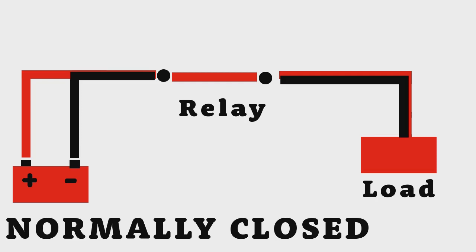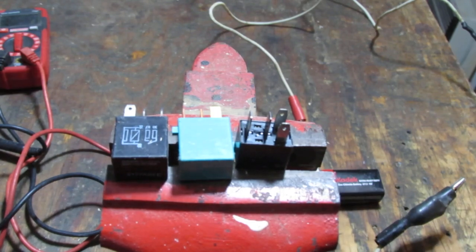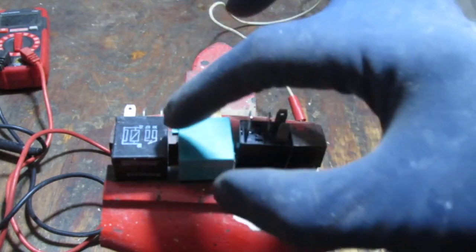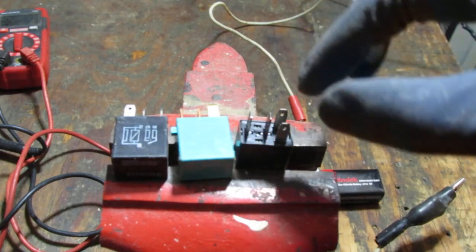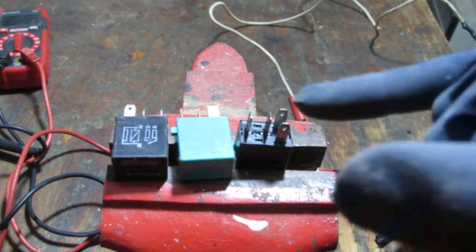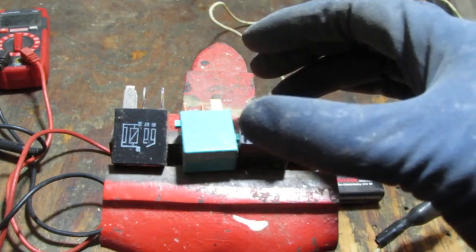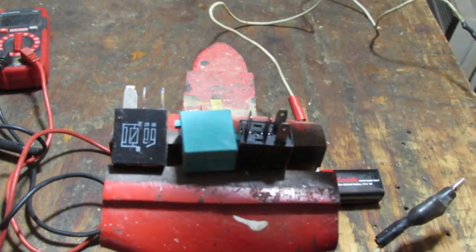So relays can come in two formats, a closed or an open circuit. So let's say you don't have a diagram. But let's start with an example. Here's an example of a diagram. Here's a relay without a diagram. These are four-prong relays, and they are from a Honda Civic, 1995 Honda Civic.